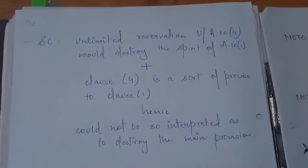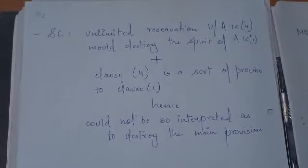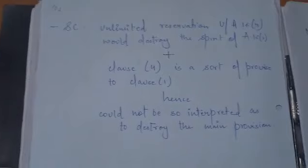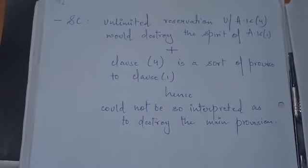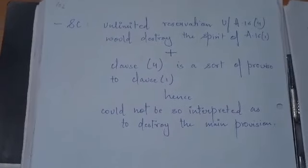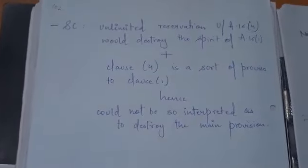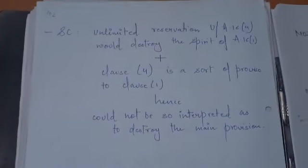Plus, Clause 4 of Article 16 is a sort of proviso to Clause 1 of Article 16. And hence, it cannot be so interpreted so as it would destroy the main enacting provision to which it is a proviso. Accordingly, the petitioner's argument was accepted.